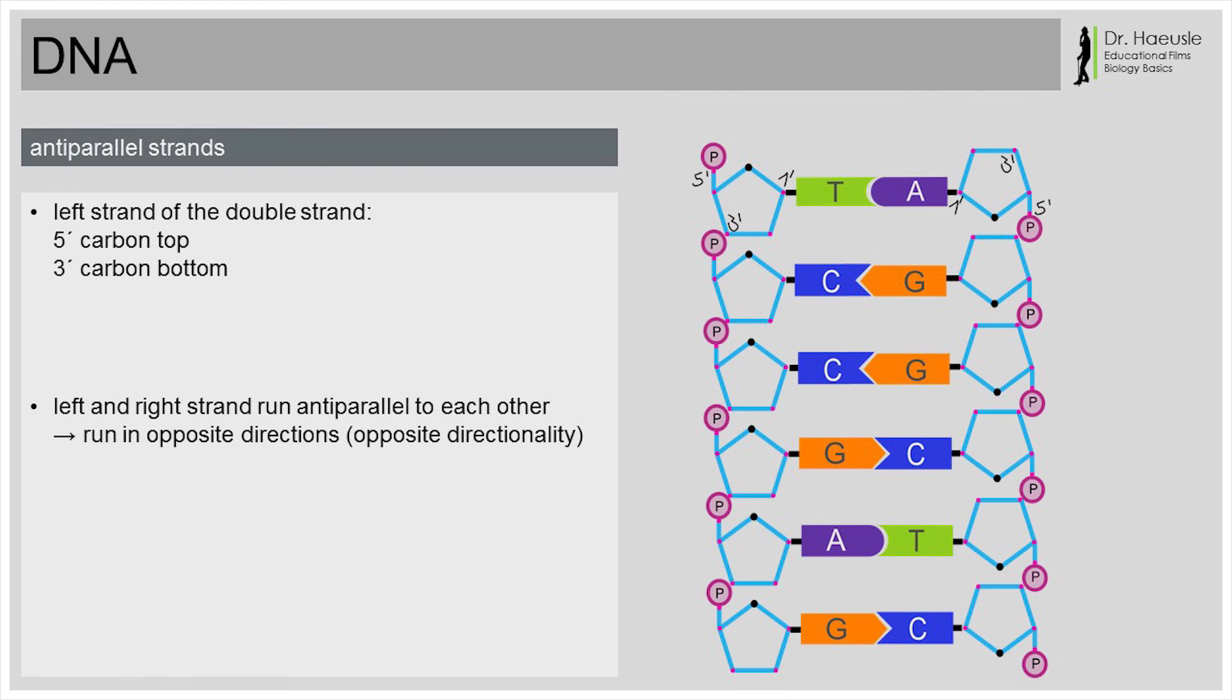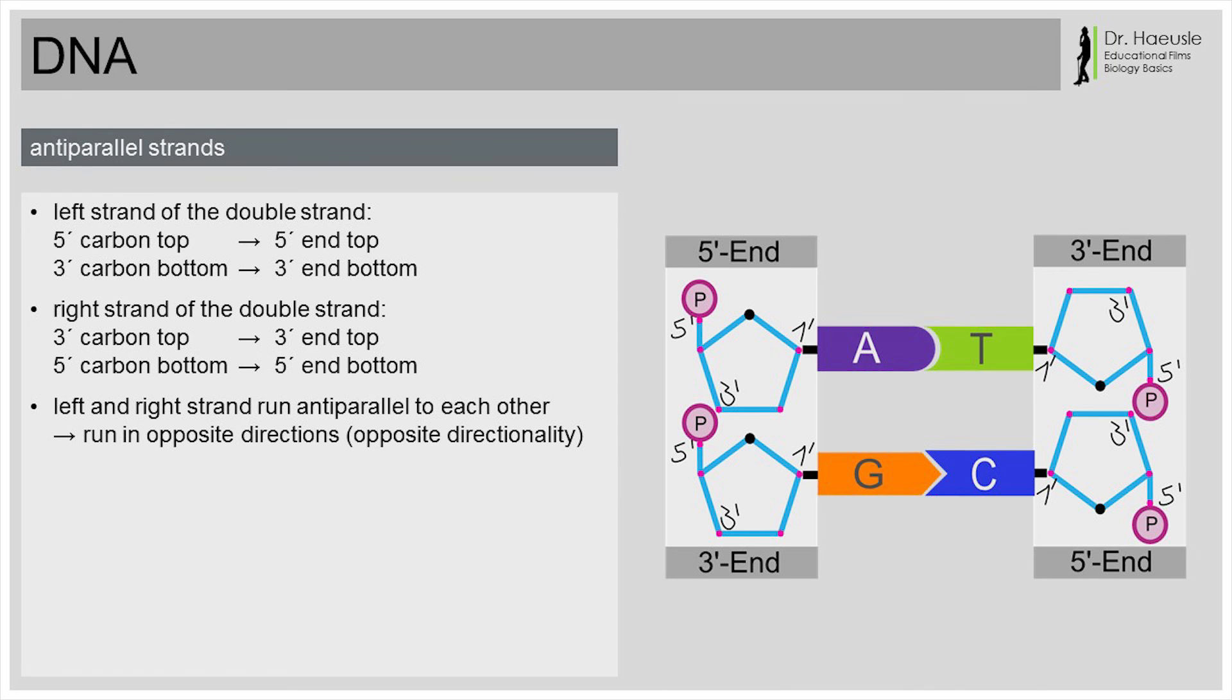The right and the left strand of a DNA double strand are anti-parallel. They run in opposite directions. In the right strand, the 3' carbon is at the top and the 5' carbon at the bottom. This principle is also called opposite directionality. The top end of the left strand is the 5' end. The top end of the right strand is the 3' end. The bottom end of the left strand is the 3' end. The bottom end of the right strand is the 5' end.